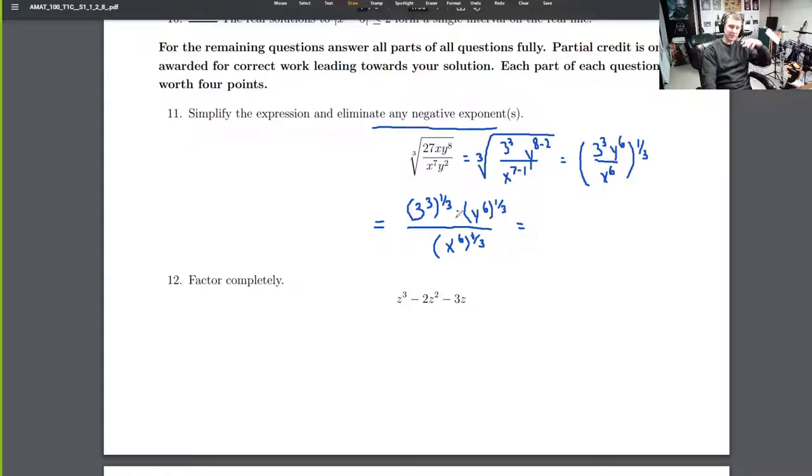When you've got these things raised to powers, you can multiply the powers together. So this is 3 to the 3 times 1/3, which of course is 1. That's 3 to the 1st times y to the 6th times 1/3, which is 2 - this is y squared.